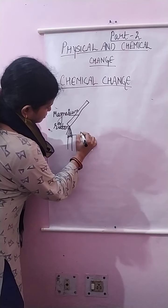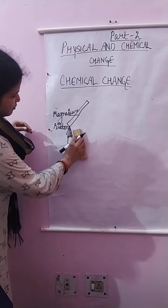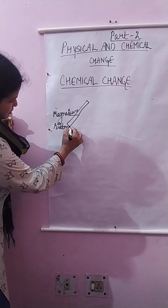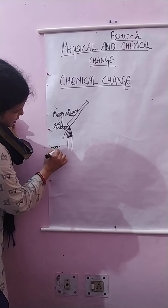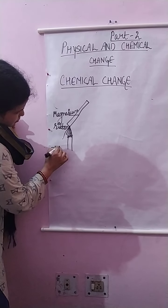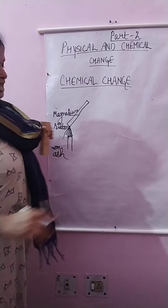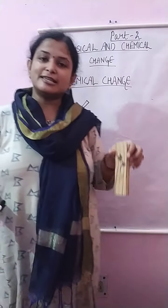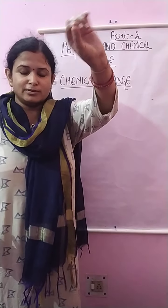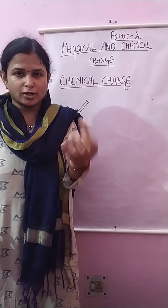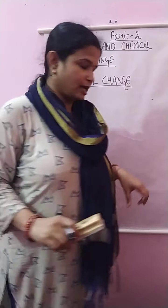We are burning and heating the magnesium ribbon. After burning, ash starts depositing — powdered ash. Like in the case of an incense stick, when we burn it, ash comes out. Similarly, when we burn the magnesium ribbon, ash is collected.